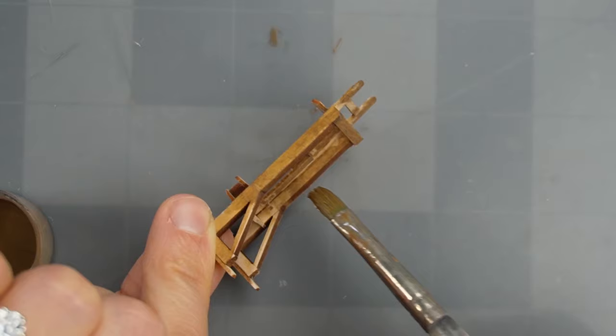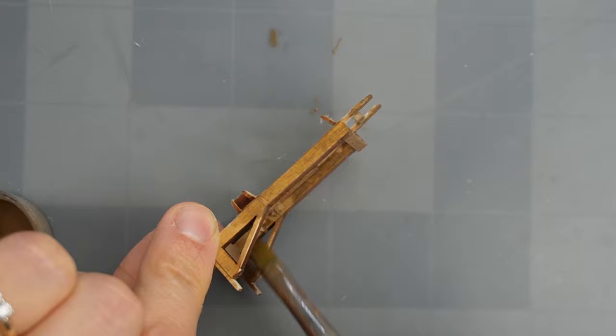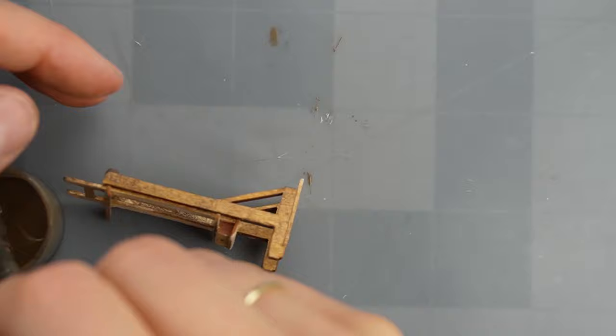I'm using some watered down brown paint to add color to the wood, and I'll also be adding some paint splatter to make it look like Frida actually used this easel.